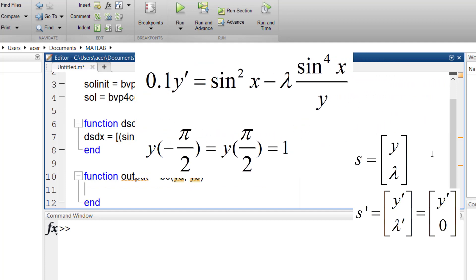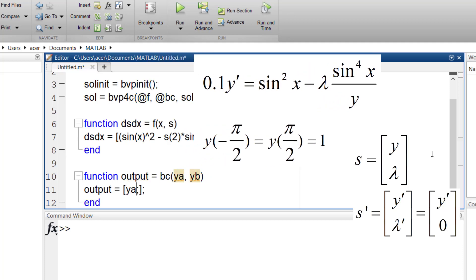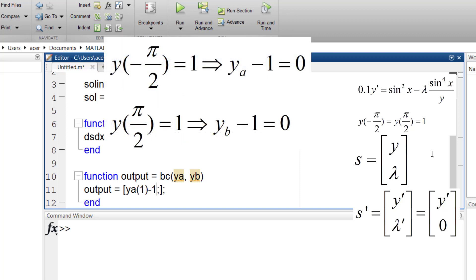For boundary conditions, this is A and this is B. As I said, the right-hand side of my boundary condition equations must be 0. So I rewrite the equations like this. And this is going to be my output.